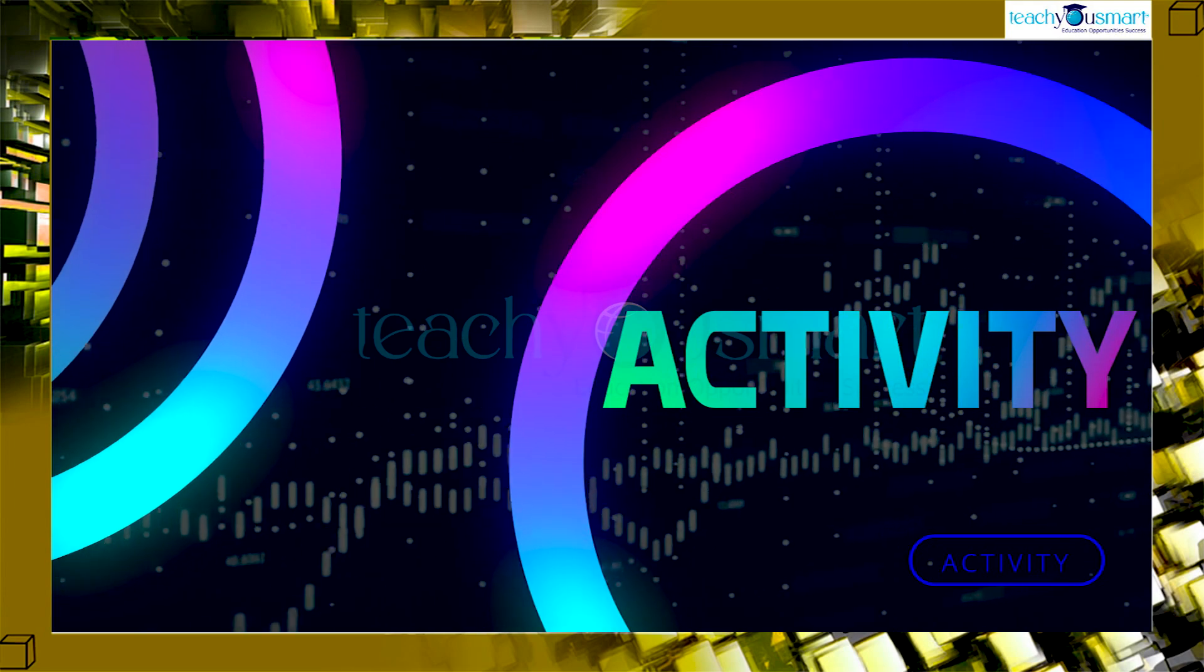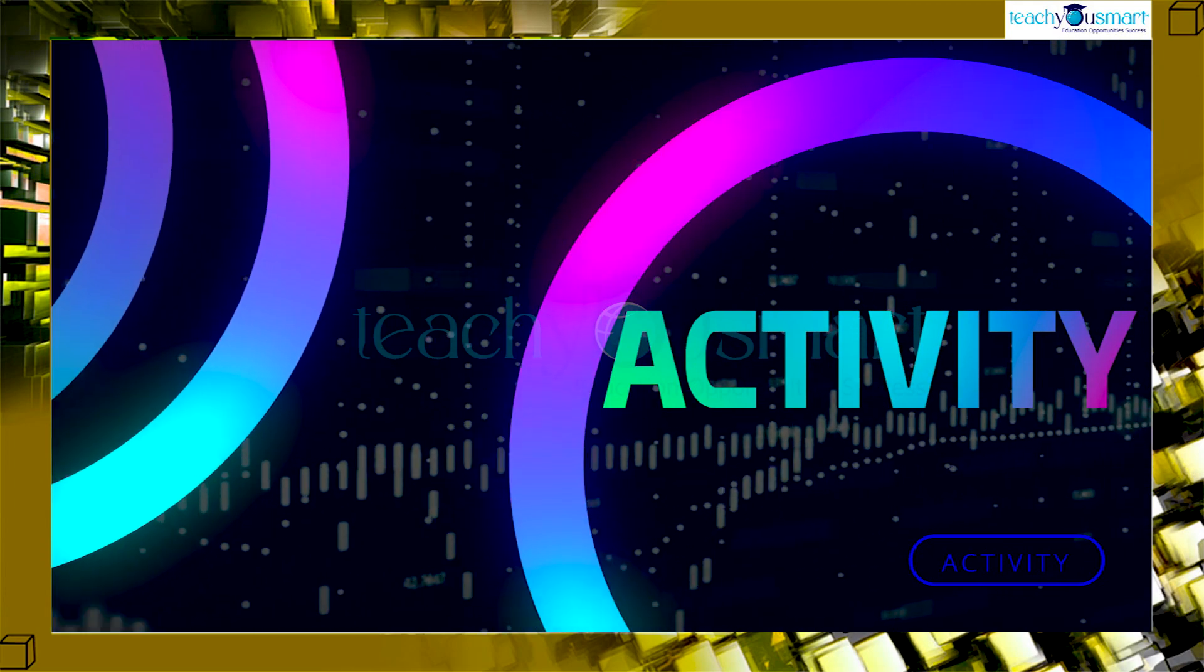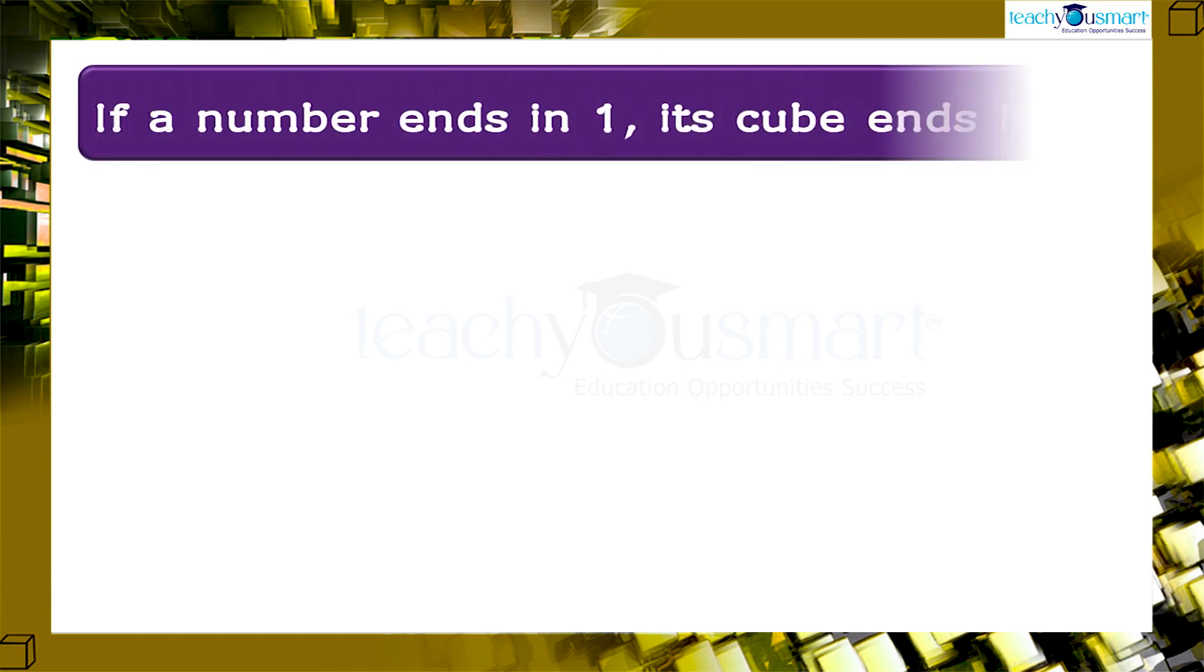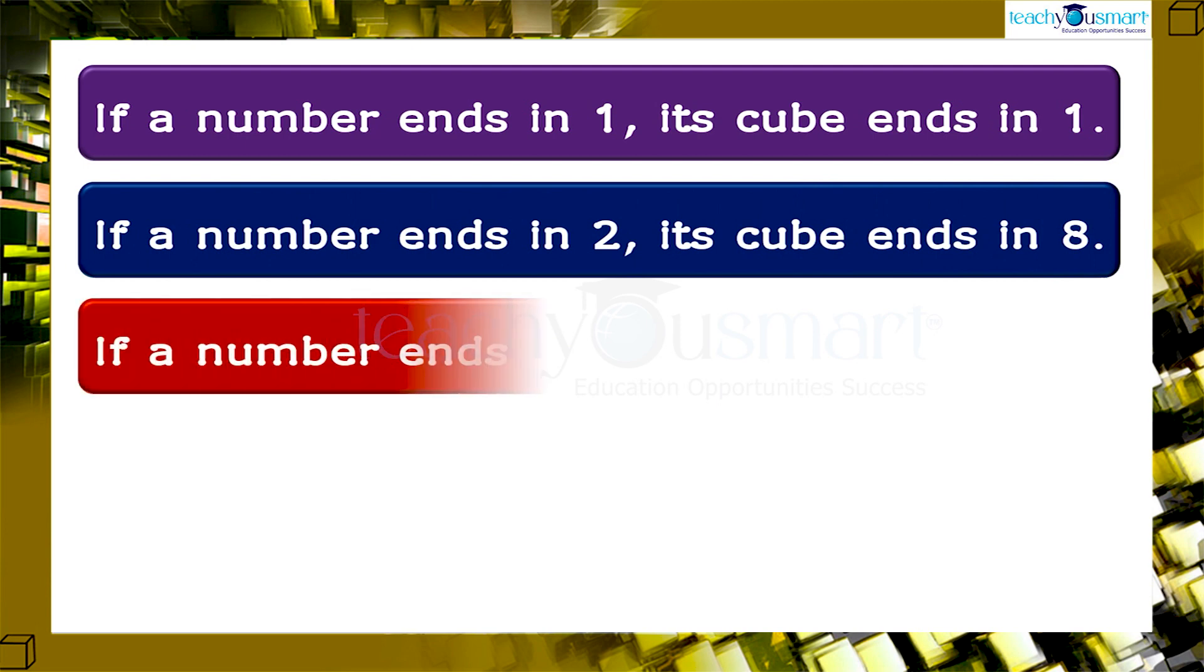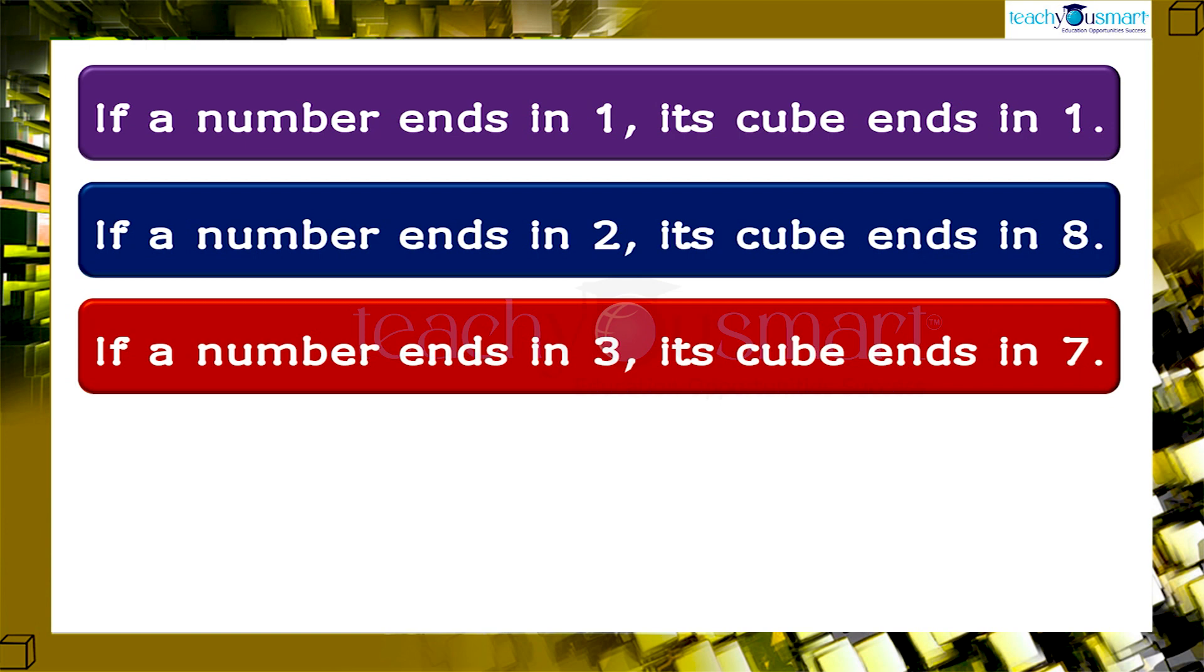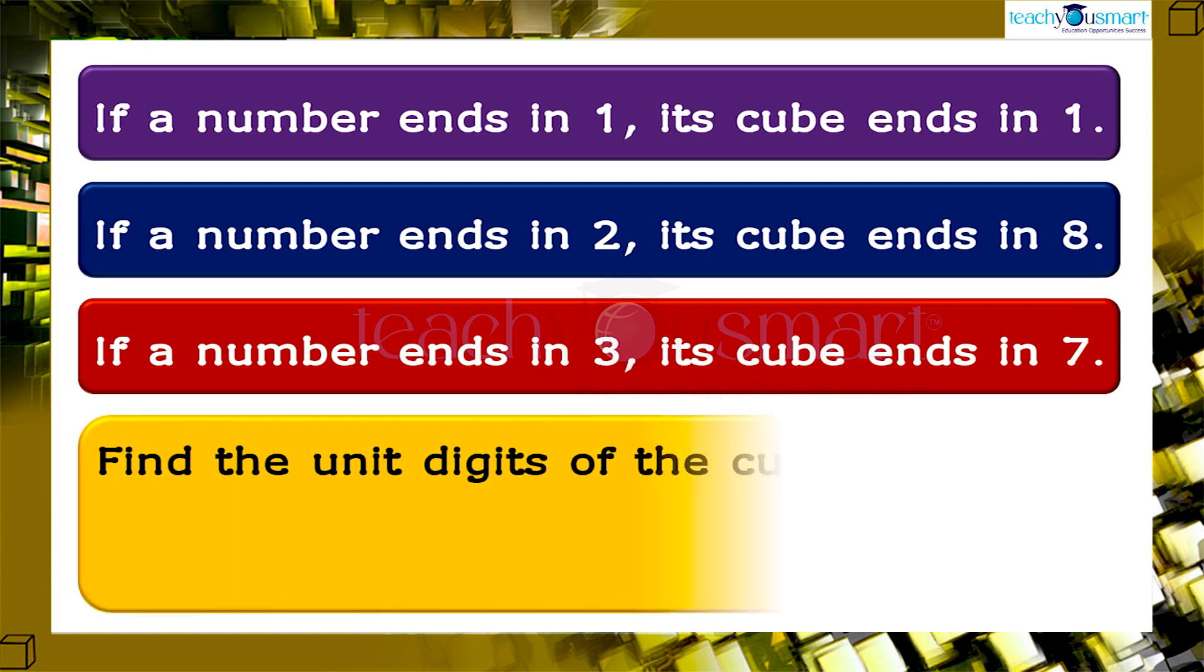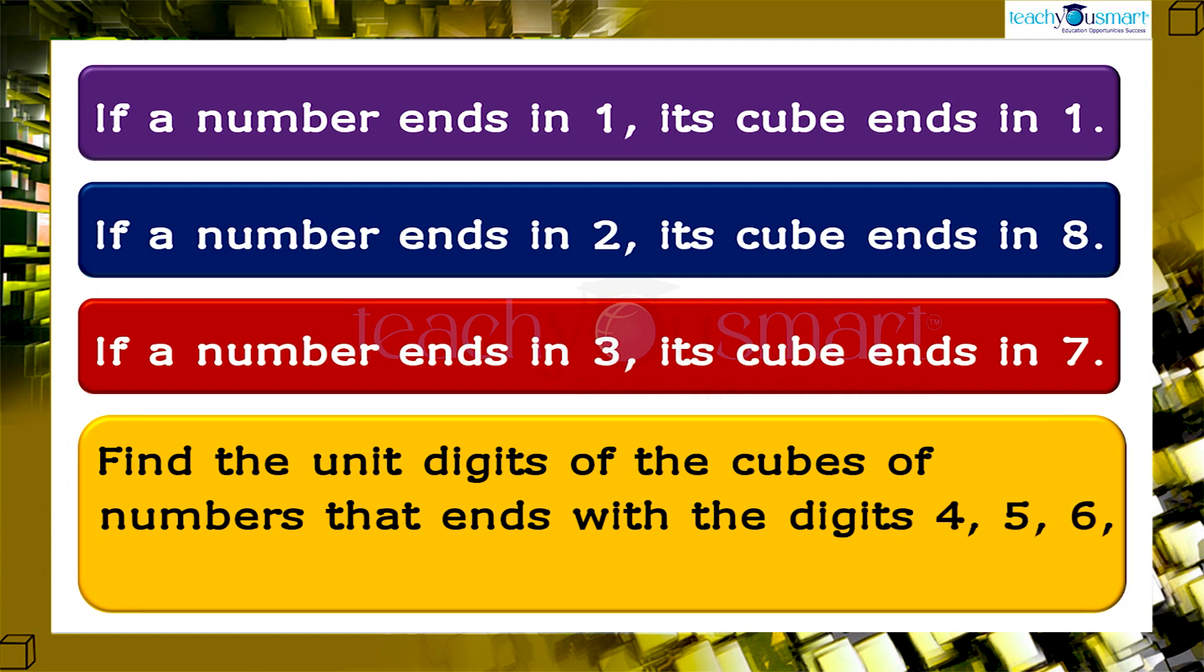Let's do an activity. We have seen that if a number ends in 1, its cube ends in 1. If a number ends in 2, its cube ends in 8. If a number ends in 3, its cube ends in 7. Find the unit digits of the cubes of numbers that ends with digits 4, 5, 6, 7, 8, 9 and 0.